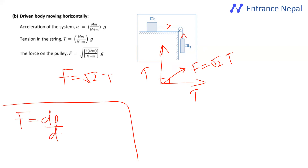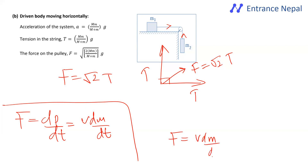For a variable mass system such as a rocket, the thrust force is given by: F = v(dm/dt), where v is the exhaust velocity and dm/dt is the rate of change of mass.